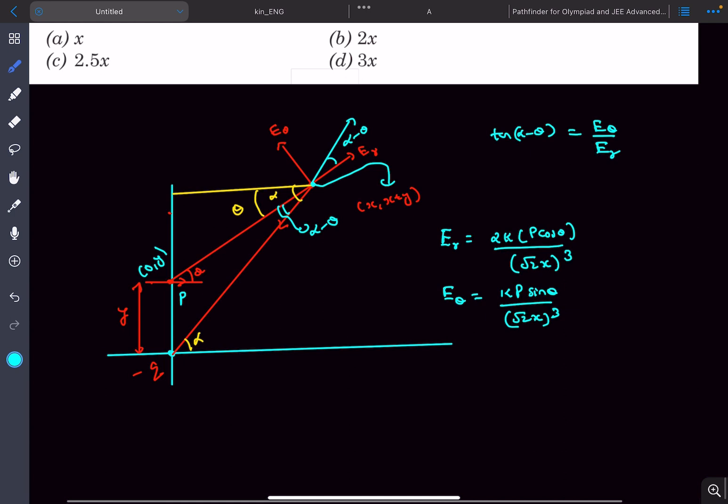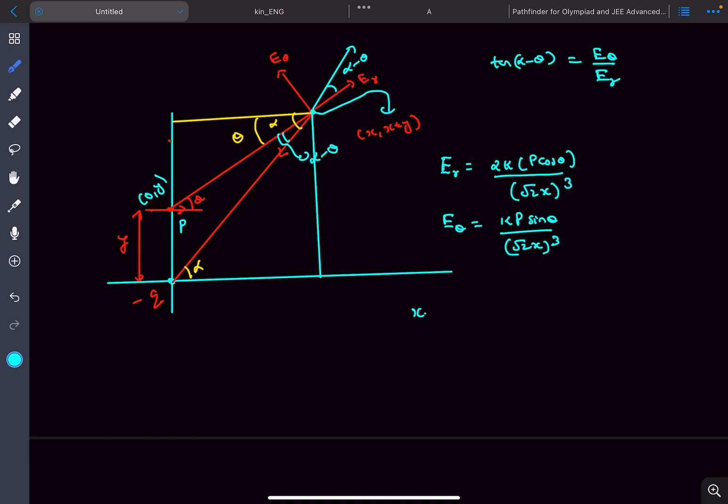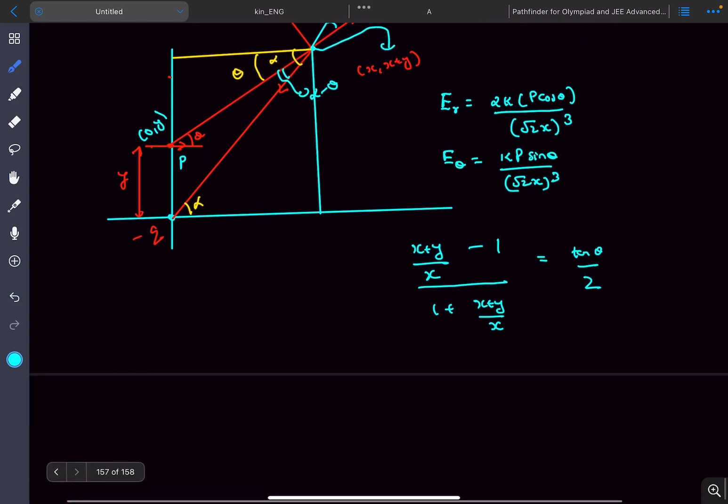We'll get the value of now tan of a minus b is going to be tan a minus tan b upon one plus tan a tan b. And the value of tan alpha from this triangle, we can easily find it out from this triangle will be x plus y divided by x minus tan theta. Tan theta is going to be one upon one plus tan a tan b and this would be equal to e theta divided by e r. Now again tan theta is going to be one.